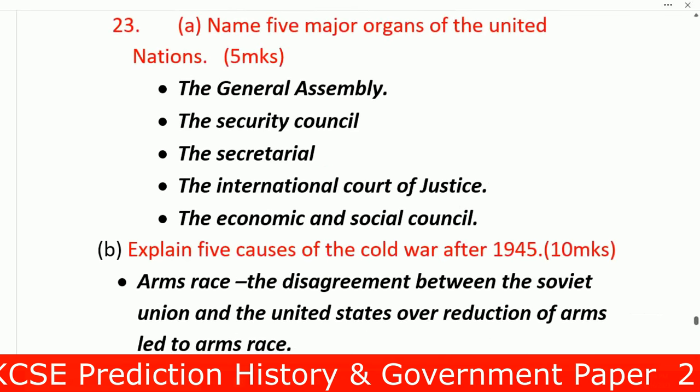Name five major organs of the United Nations — also very common. They can ask you the functions of each organ, or just ask you to state the major organs. The major organs of the United Nations are: the General Assembly, the Security Council, the Secretariat, the International Court of Justice, and the Economic and Social Council.